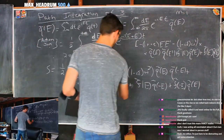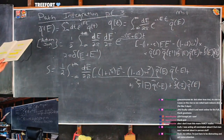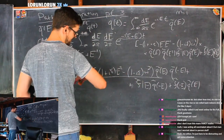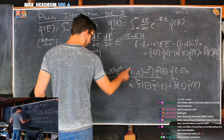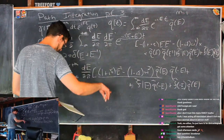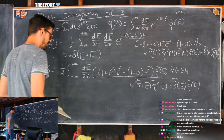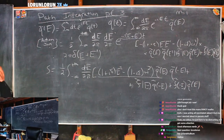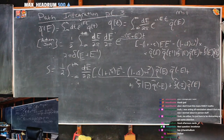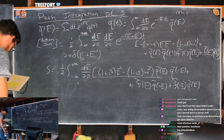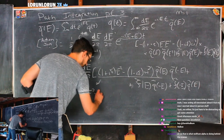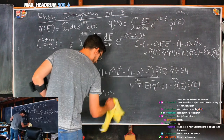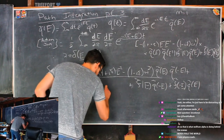Now we can simplify. Since i-epsilon is infinitesimally small, anything attached to it is still just i-epsilon — so we can absorb those epsilon terms. We rewrite this as E squared minus omega squared minus i-epsilon. We have seen this before — this is the propagator! That's E squared minus omega squared plus i-epsilon.